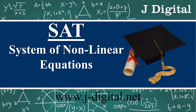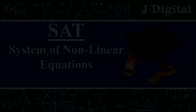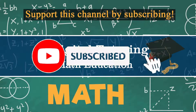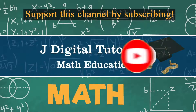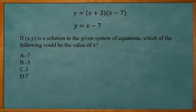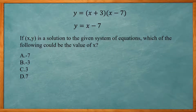In this video, I'm going to cover an example SAT problem where you need to solve a system of nonlinear equations. We have two functions: y equals the quantity (x + 3) times the quantity (x − 7), and y equals x − 7.